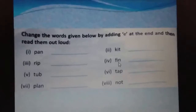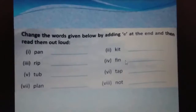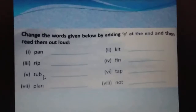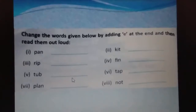Next word is F-I-N — 'fin.' When we add E, the word becomes 'fine.' Fine means okay — achcha. Next word is T-U-B — 'tub.' When we add E, the word becomes 'tube.' Tube — like a tube light at home or a water tube used to water plants.